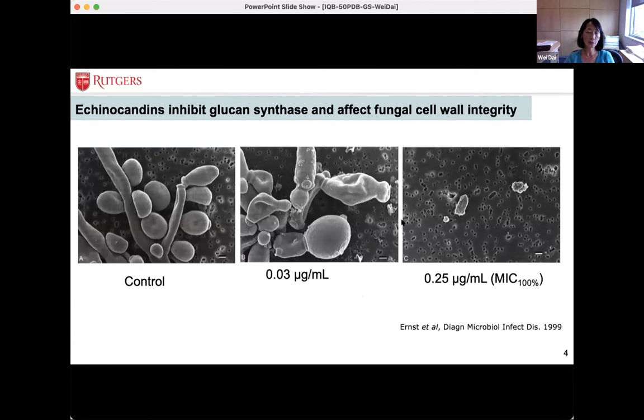If we use, for example, caspofungin to treat Candida species, we can see very obviously they show inhibition of growth and also the whole cell shows deformed cell wall. At higher concentration, 100% minimal inhibitory concentration, you actually can see there are only cellular debris left, suggesting both the cell membrane and also the cell wall structure are completely destroyed.